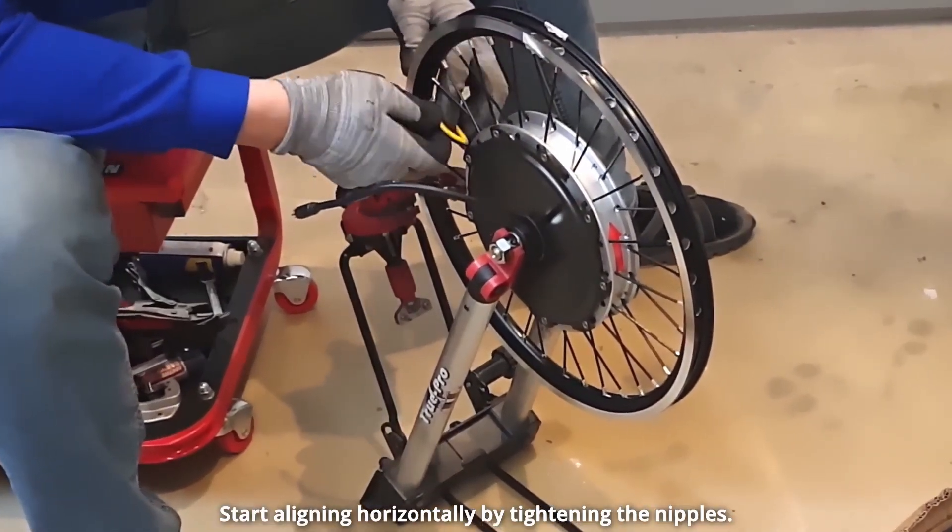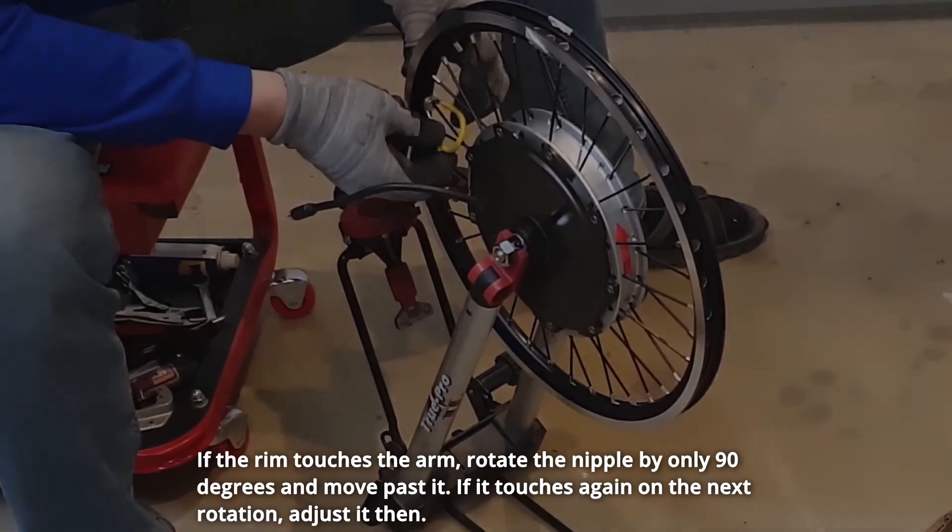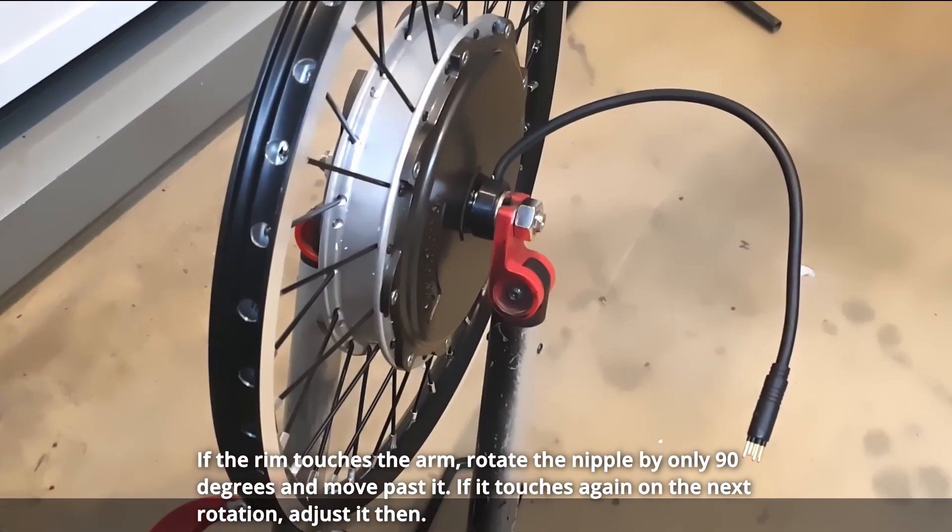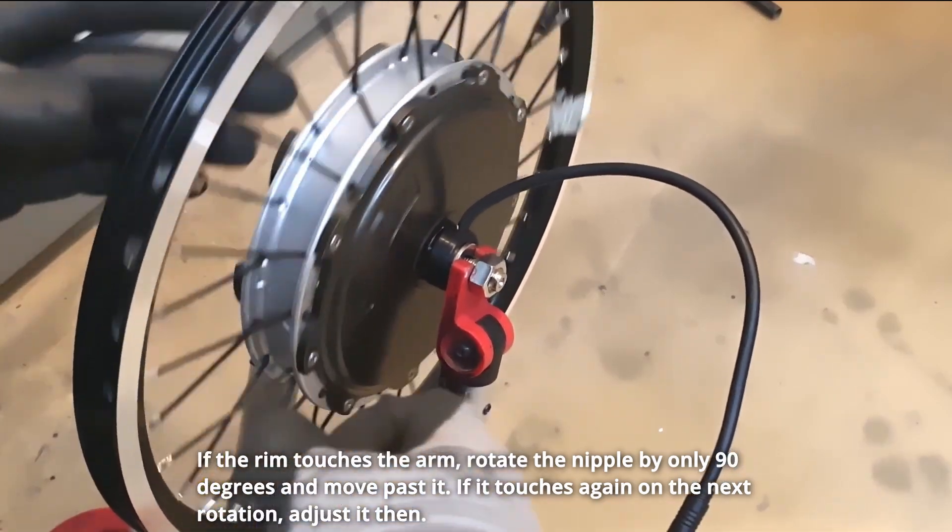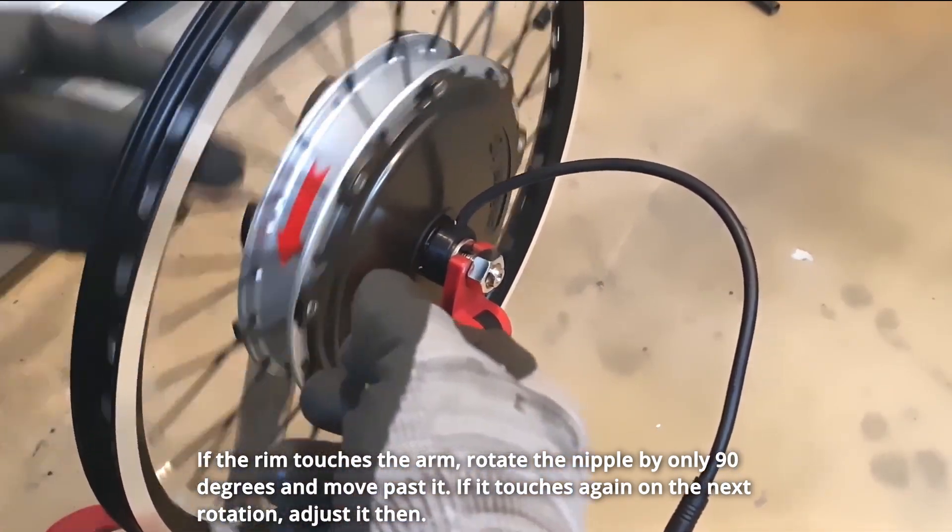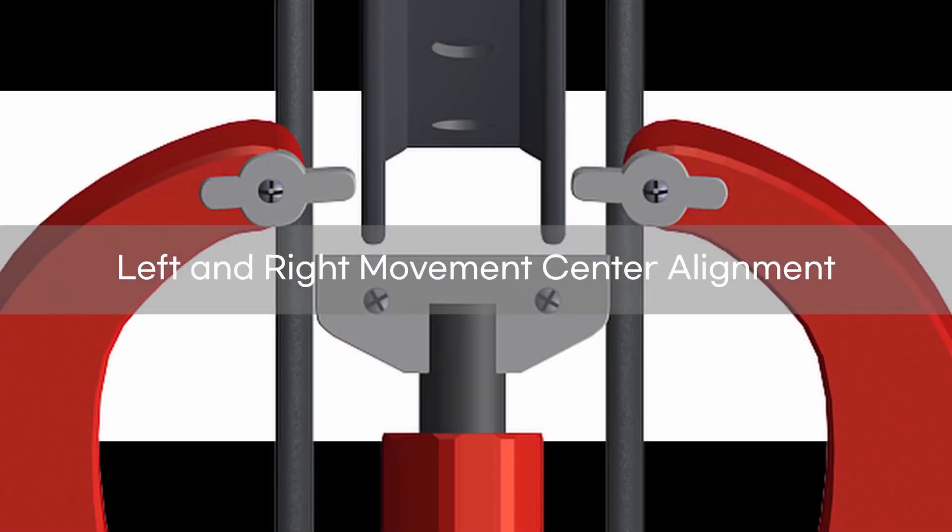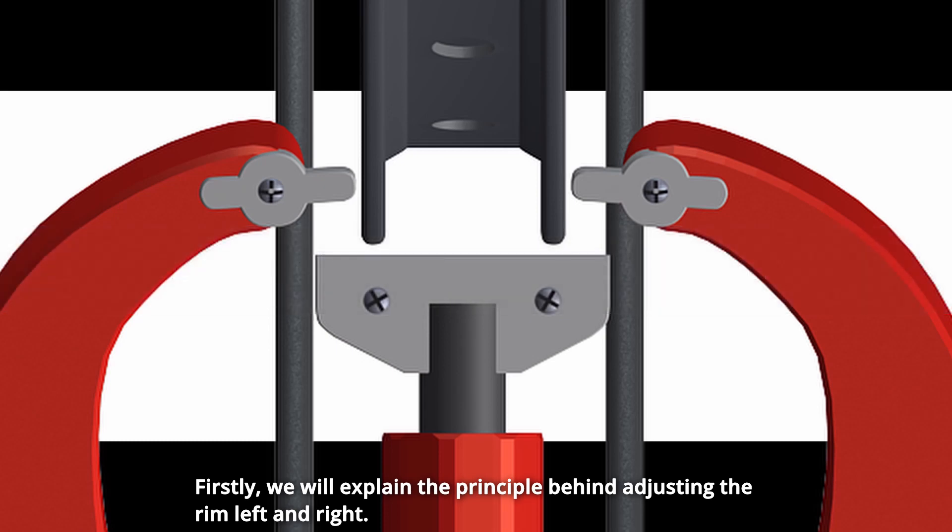Start aligning horizontally by tightening the nipples. If the rim touches the arm, rotate the nipple by only 90 degrees and move past it. If it touches again on the next rotation, adjust it then. We will explain the principle behind adjusting the rim left and right.